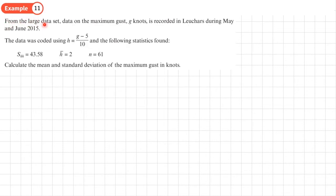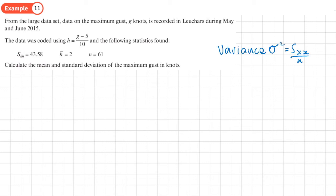Example 11: from a large data set, data on maximum gusts in knots is recorded during May and June 2015. The data was coded and the following statistics found: S_hh = 43.5, mean of h = 2, and n = 61. The S_hh notation comes from the variance formula: another way of calculating variance is S_xx over n — we'll look at this in more detail in Further Statistics.